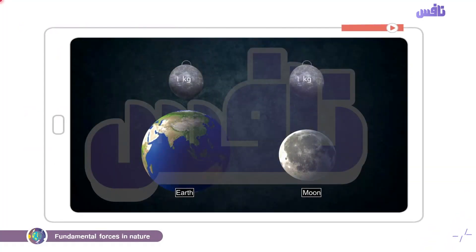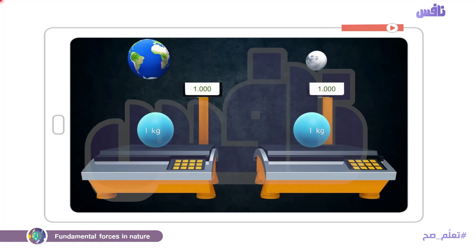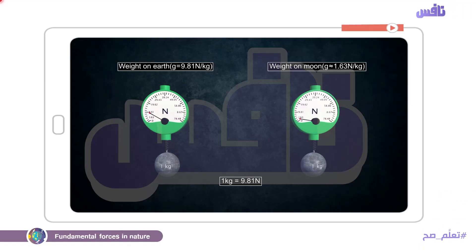تعالوا نشوف الفيديو ده: عندنا two objects same mass. تعالوا نشوف الweight on earth and the weight on moon. طبعا mass doesn't change — ده one kilogram وده one kilogram. الأرض أكبر، يبقى متوقع إن الweight on earth greater than the weight on moon. الوزن على الأرض 9.8 newton per kilogram، although the weight on moon equals 1.6 newton per kilogram.